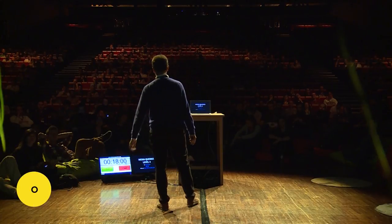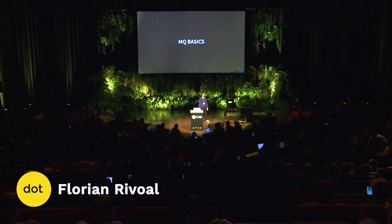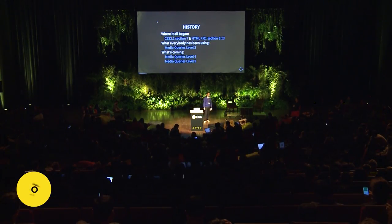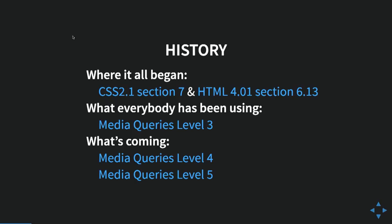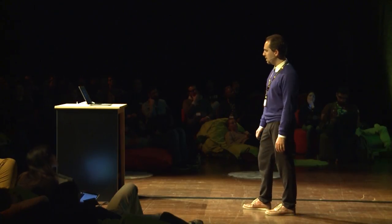I'm going to talk about one specification: media queries, and specifically level 4. Let's talk about the basic parts to make sure we're all on the same page. This started in internet prehistory with CSS 2.1 and HTML 4. People saw that it was good, so we made more of that. Media queries level 3 is what pretty much all of you have been using for the last few years. Media queries level 4 as a specification is just done, just ready.